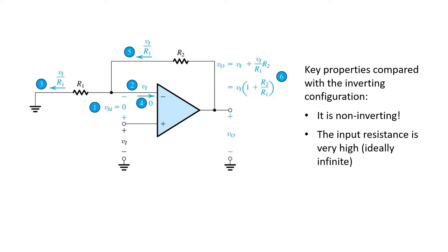Next, let's analyze this configuration to find its gain. The input source is still applied here. Remembering that we're assuming an ideal op-amp for the time being, we can make use of the virtual short circuit assumption. That's step one, which tells us that the two input terminals must be at the same voltage.